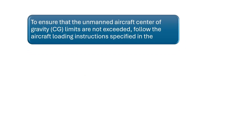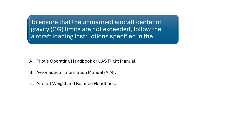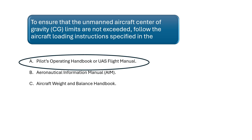To ensure that the unmanned aircraft's center of gravity limits are not exceeded, follow the aircraft loading instructions specified in the pilot's operating handbook or flight manual. Before conducting flight operations, the remote pilot-in-command should verify the aircraft is correctly loaded by determining the correct weight and balance conditions of the aircraft, as specified in the pilot's operating handbook or flight manual for the unmanned aircraft.